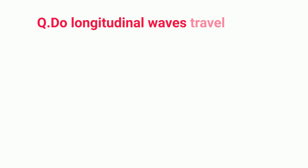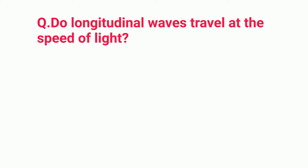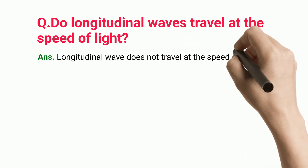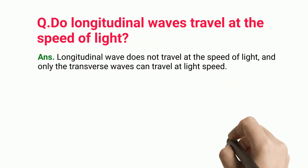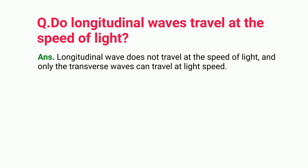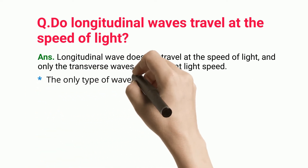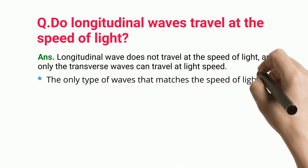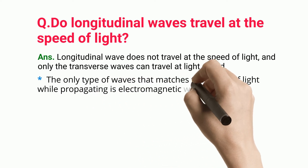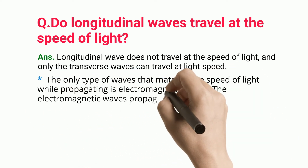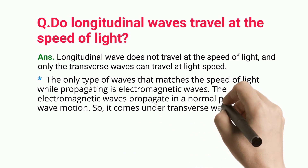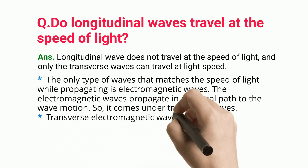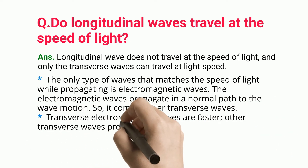Do longitudinal waves travel at the speed of light? Longitudinal waves do not travel at the speed of light, and only transverse waves can travel at light speed. The only type of waves that matches the speed of light while propagating is electromagnetic waves. The electromagnetic waves propagate in a normal path to the wave motion, so they come under transverse waves.